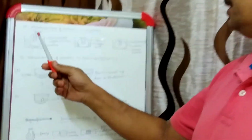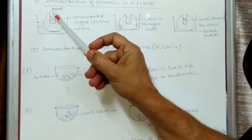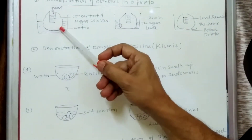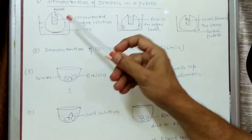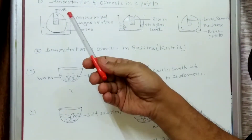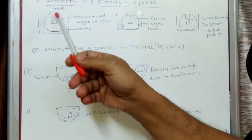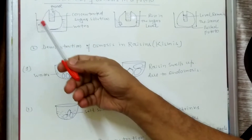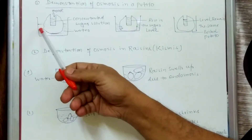So here what we take: we take a potato in which we make a groove by a blade or knife, and from the outside we just peel the potato so that it has white color. That potato is then put under the sugar solution — inside the groove we take the sugar solution, and this entire potato is placed in a tray of water.